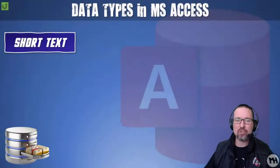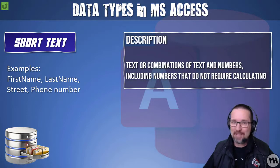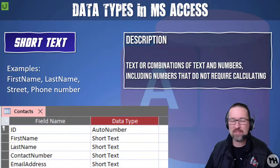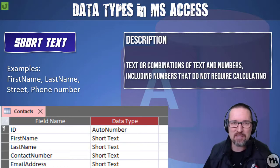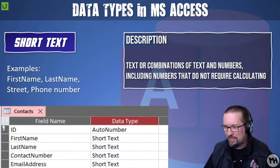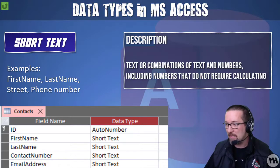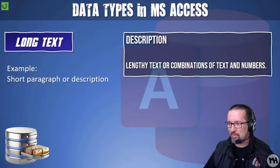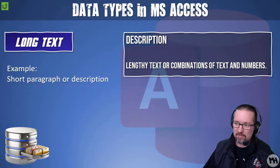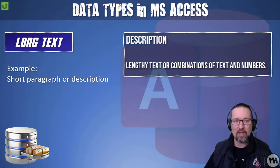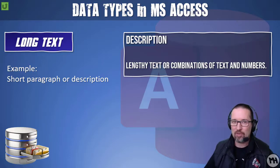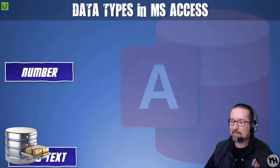Short text is just short text — names, phone numbers, surnames, street addresses, anything that's a sentence long. It covers descriptions or combinations of text and numbers, including numbers that don't require calculating. Long text is for lengthy descriptions or combinations of text and numbers — think paragraphs, memo-type content, a whole description of something.